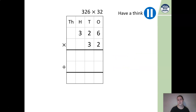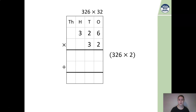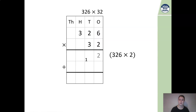Pause the video and have a think about how we might answer this question. It's the same rules as we've done before. Our very first sum is going to be 2 multiplied by 326. So 2 times 6 is 12, so we need to carry that 10 across — exchange that into our 10s — and we can write our 2.